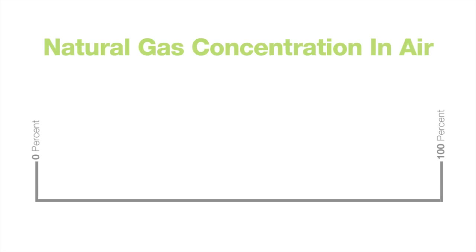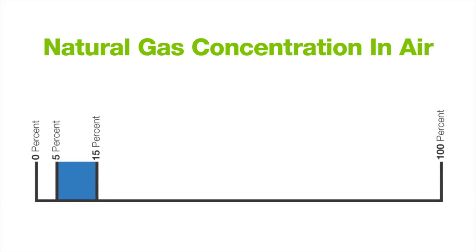Natural gas also needs to have a concentration of 5 to 15 percent in air or oxygen to burn. Any concentration below 5 percent is too lean to burn, and anything above 15 percent is too rich to burn.